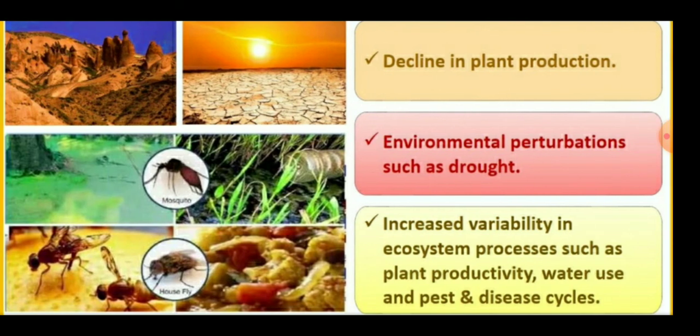In general, the loss of biodiversity in a region may lead to different impacts: the decline in plant production, lower resistance to environmental perturbations such as drought, and increased variability in ecosystem processes such as plant productivity, water use, and pest and disease cycles.